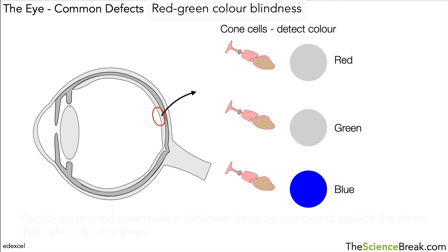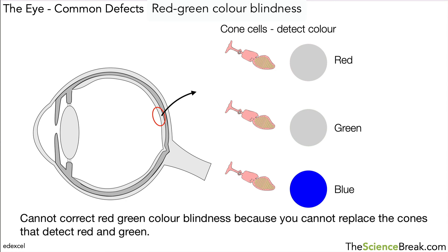Now the problem with this is that it cannot be repaired. We cannot correct red-green colour blindness because you cannot replace the cones that detect red and green. So this is at the moment a pretty much permanent issue if we have this problem.